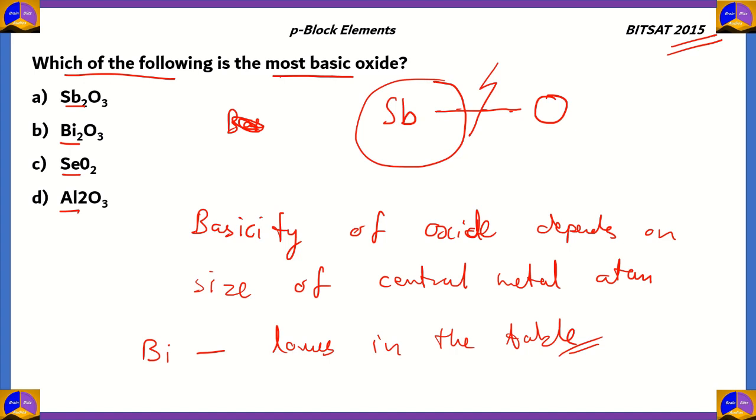Bismuth is the lowest metal present in the table, which means it has the largest size. And since bismuth has the largest size, the bonds between bismuth and oxygen are easiest to break. That makes Bi2O3, option B, the most basic oxide.